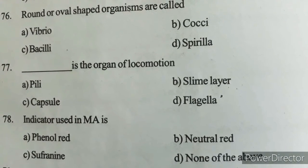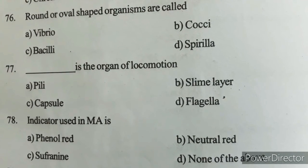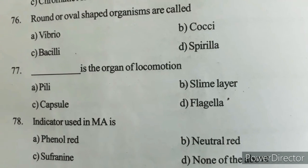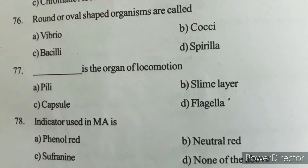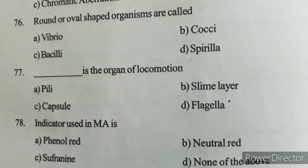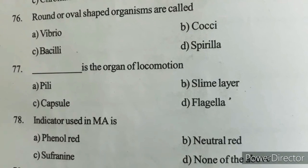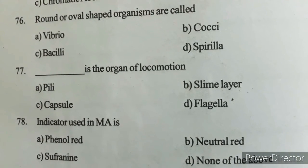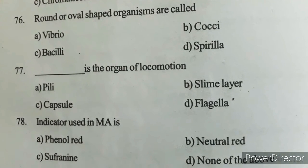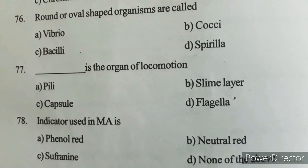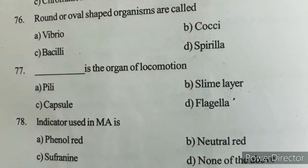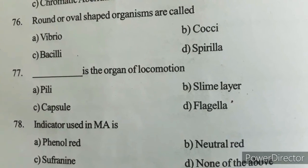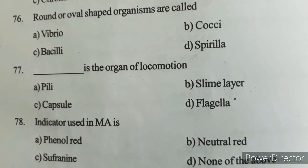Next question: What is the organ of locomotion? Option A) Pili, Option B) Slime layer, Option C) Capsule, Option D) Flagella. Correct answer: Option D — Flagella. Note: Pili are used for attachment, and sex pili are used in conjugation — they are not the organ of locomotion.